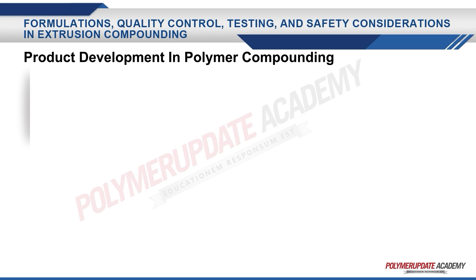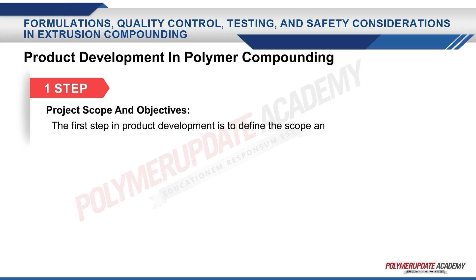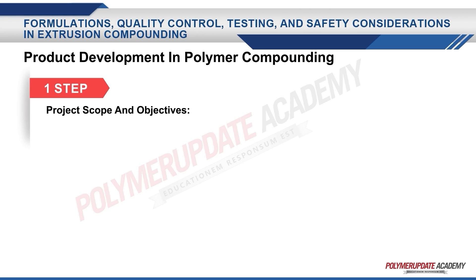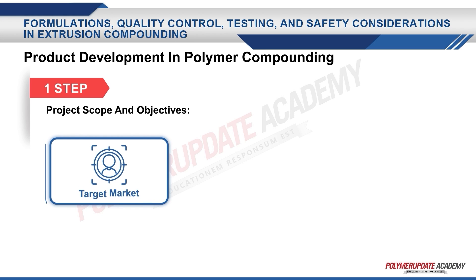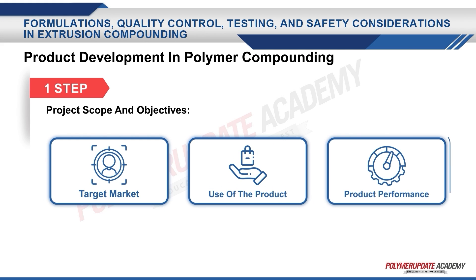The first step in the product development procedure is to define the scope and objectives of the project. This includes defining the target market, the intended use of the product, and the performance requirements.